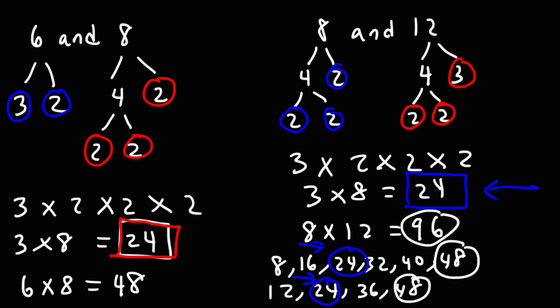So now you know how to find the least common multiple of two numbers using prime factorization.